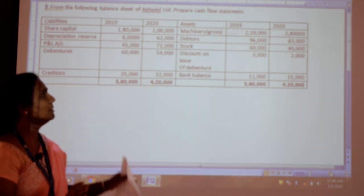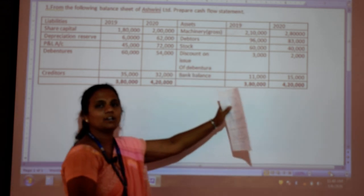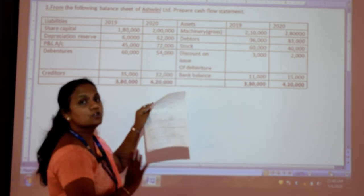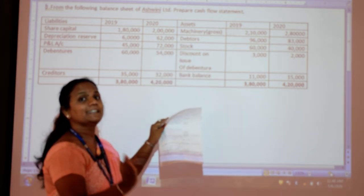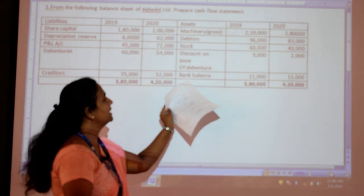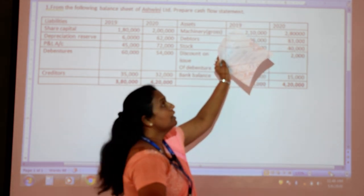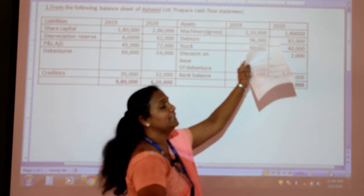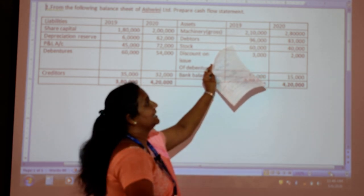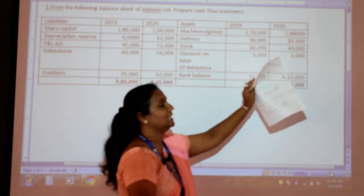In this problem, first we see where cash is. Cash is an asset, so it will come on the asset side. Here there is no cash, but a cash equivalent — bank balance. They have given figures for two years: 2019 and 2020. 2019 is treated as the beginning, and 2020 is treated as closing.